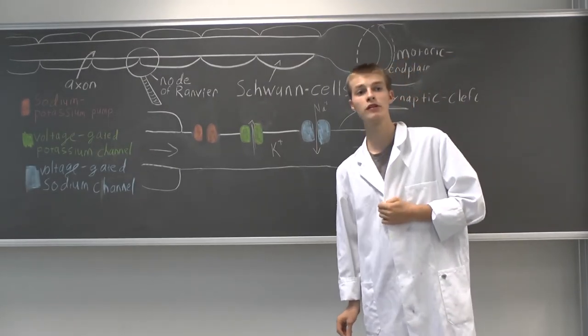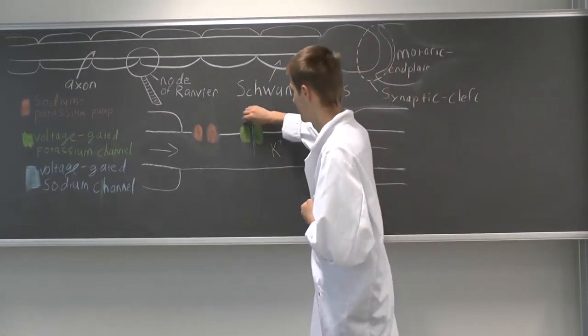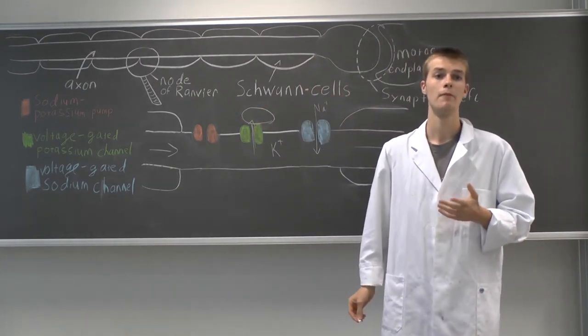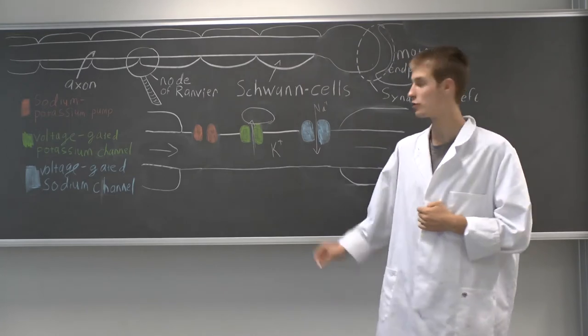Dendrotoxin binds the voltage-gated potassium channels at the node of Ranvier and prevents the potassium ions from rushing out.